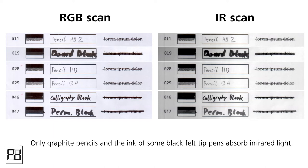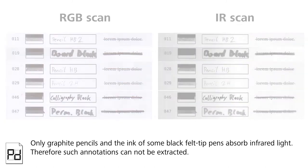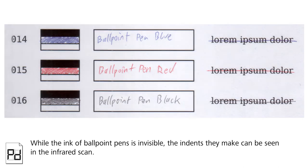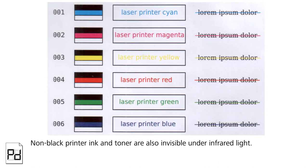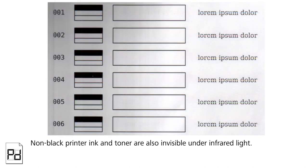Therefore, such annotations cannot be extracted. While the ink of ballpoint pens is invisible, the indents they make can be seen in the infrared scan. Non-black printer ink and toner are also invisible under infrared light.